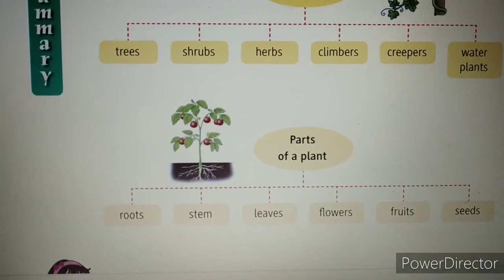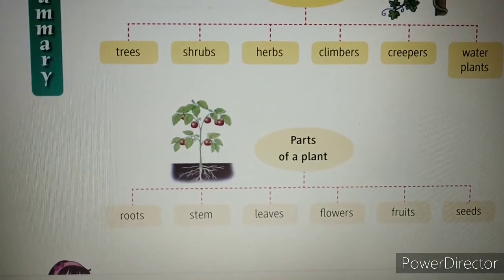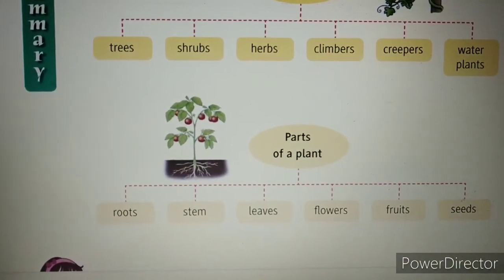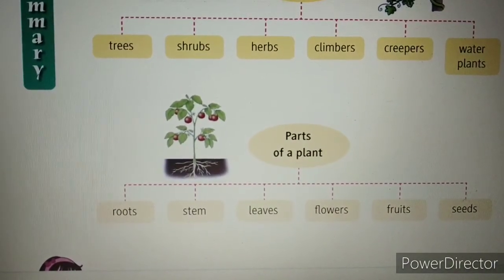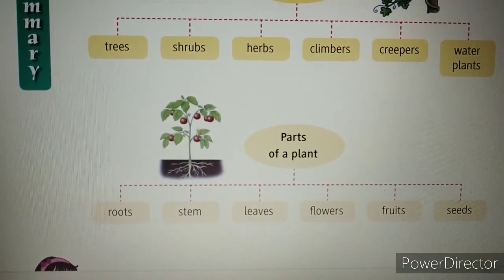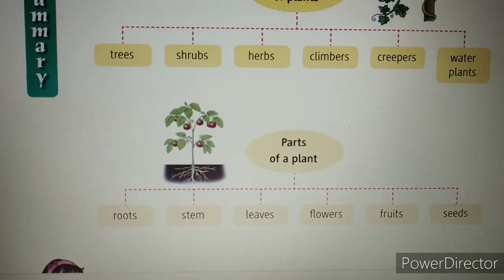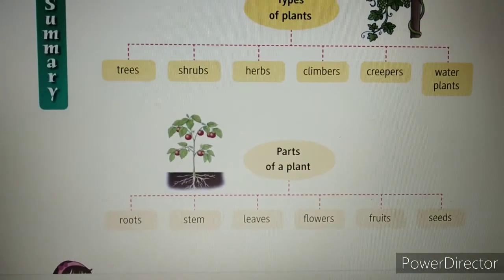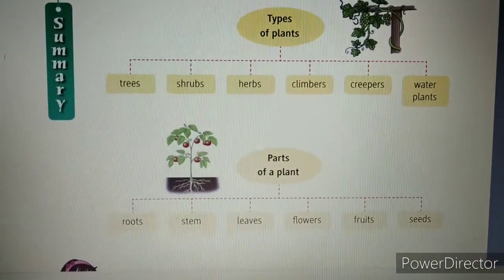Roots grow under the ground. Stem grows upward above the ground. Then leaves — you can see leaves, flowers and fruits. Seeds are inside the fruits. So all these are parts of plant. I hope you all are clear with Chapter 3: Plants Around Us. I will be back with another video. Till then, stay home, stay safe. Thank you.